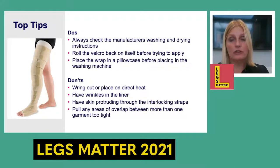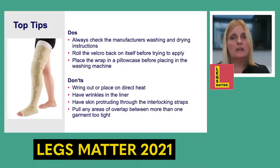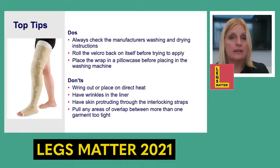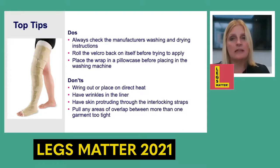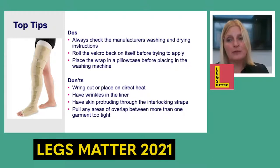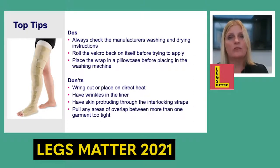A couple of top tips on washing and drying: always read the instructions on your individual garments. Generally, many garments can go in a delicate washing machine cycle and a very cool drying cycle — but not all. Definite don'ts: don't wring the garment out aggressively as you could damage the fabric, and don't put the garment on direct heat, as that will damage the fabric and could reduce the level of compression you're receiving.